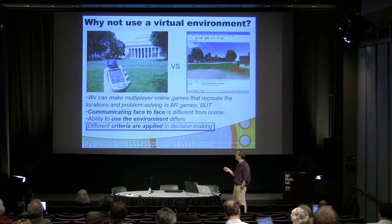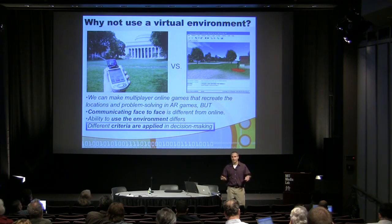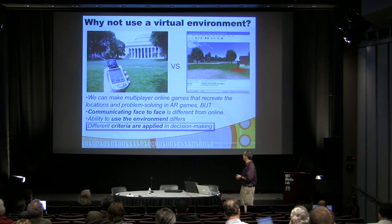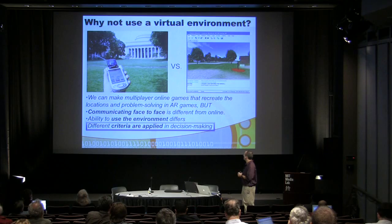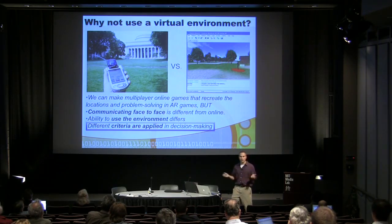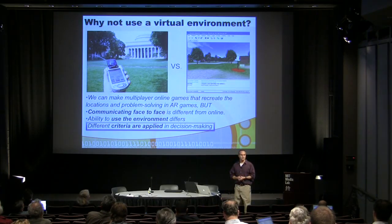The most important thing is this: in the MIT scenario, the chemical is right in the middle of Killian Court — the one grassy area on the MIT campus, the dome, what everybody recognizes. The players in the virtual world said, 'That's where the chemical is. We should just drill down, suck it out, and clean it up.' And that's the correct engineering decision.